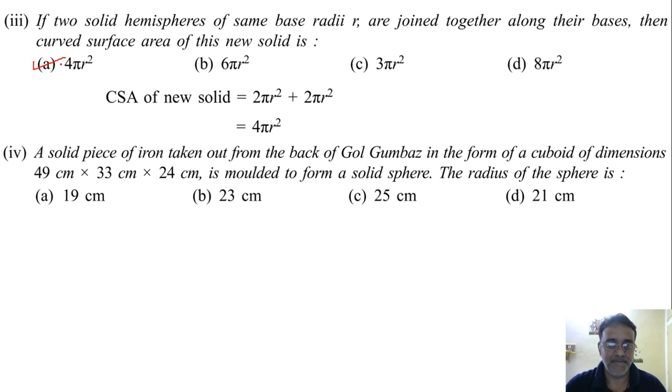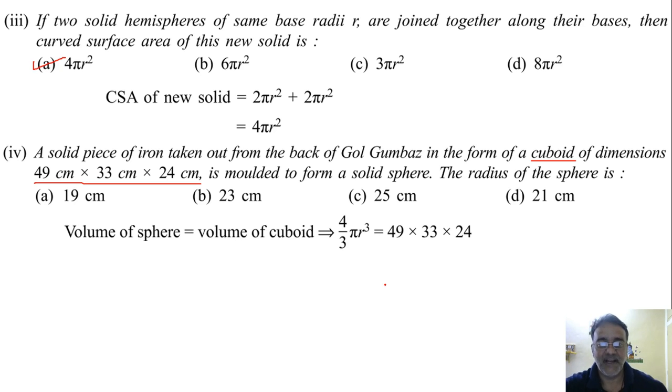Now the fourth question. A solid piece of iron taken out from a back of Gol Gumbas in the form of cuboid of dimension 49 cm x 33 cm x 24 cm is molded to form a solid sphere. The radius of the sphere is dash. So kyunki ye conversion kiya hai log. So solid jo sphere ka jo volume hai that will be equals to the volume of cuboid. That is the first point. And volume of sphere is 4 upon 3 pi r cube. And volume of cuboid is l into b into h. Whether this is clear? Yes sir.